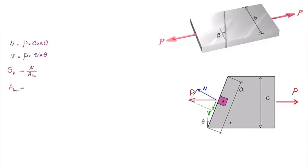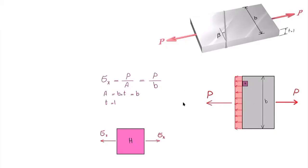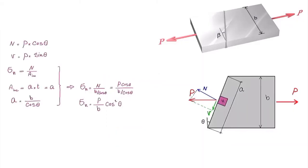The width of the inclined plane a = b/cos(θ). So normal stress sigma_n = N/A = (p·cos(θ)) / (b/cos(θ)), which simplifies to (p/b)·cos²(θ). Since p/b equals sigma_x from the previous result, we obtain sigma_n = sigma_x·cos²(θ). This gives us a relationship between the normal stress on the inclined plane and the normal stress on the original plane, based on the rotation angle theta.